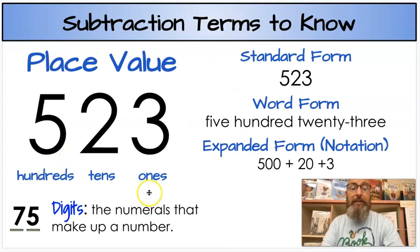Next we have place value. You need to know it's ones, tens, and hundreds place. Digits - each numeral in a number is a digit. So this is a three digit number 523, this is a two digit number 75. We have our standard form of writing it, our word form, and our expanded form or expanded notation. Being able to do this really helps with addition and subtraction. It's also going to help with multiplication later. Alright, let's get started.